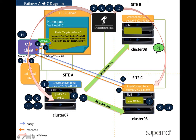One thing to note: prior to executing this failover from A to C, we need to do this P1 preparation step. This is to delete any existing SyncIQ mirror policies from B to A on the same target path as the one we are failing over from A to C. Without this step, if there are existing mirror policies from B to A, the failover process from A to C will fail due to overlaps in the same mirror target path.